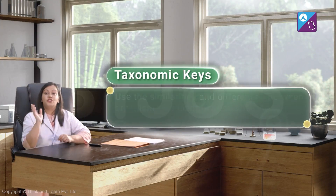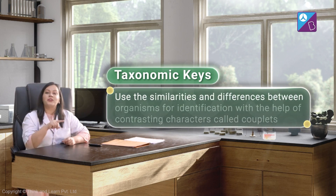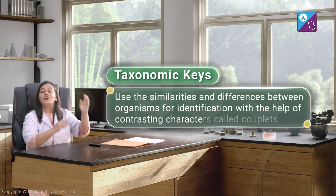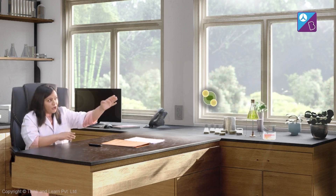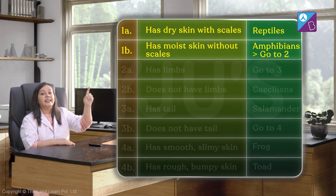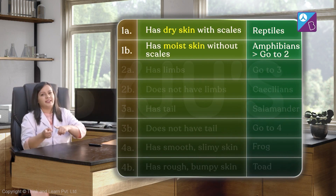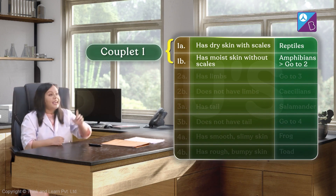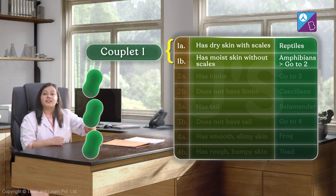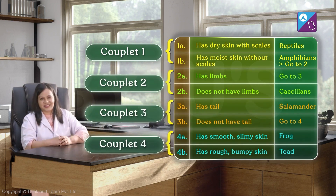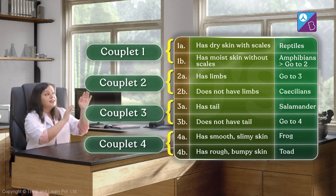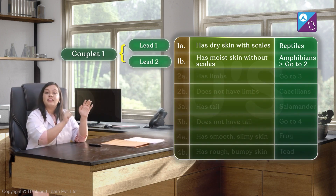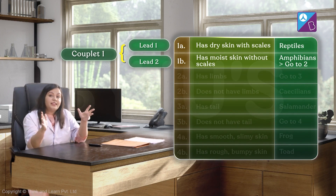Taxonomic keys use the similarities and the differences between organisms to identify them. Keys usually have pairs of contrasting characters known as couplets. For example, the first set of statements in our key talks about dry and moist skin, which are contrasting characteristics — together they form a couplet. In the same way, the rest of the pairs of statements are also couplets. Each statement within the couplet is known as a lead. So within the first couplet, the statements that talk about the types of skin are leads.